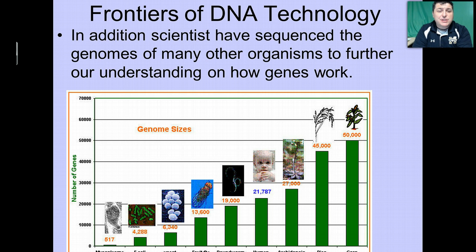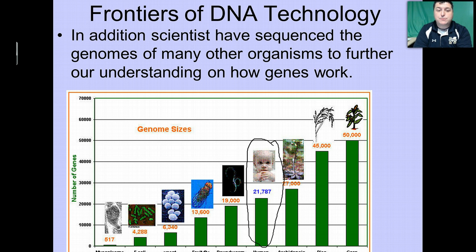In addition to mapping the human genome, we've also mapped the genomes of many other organisms to compare their genome to ours and to discover how their genes work as well. Remember Thomas Morgan's work on the fruit fly — imagine if he had the information from the fruit fly's genome with all 13,600 of their genes.